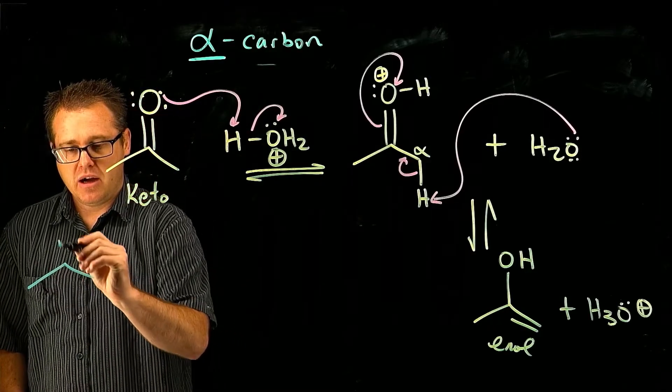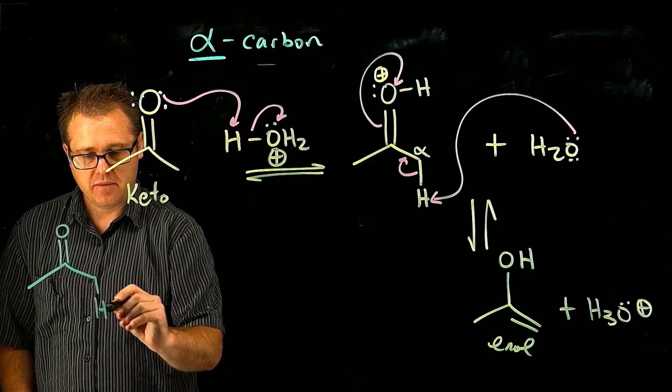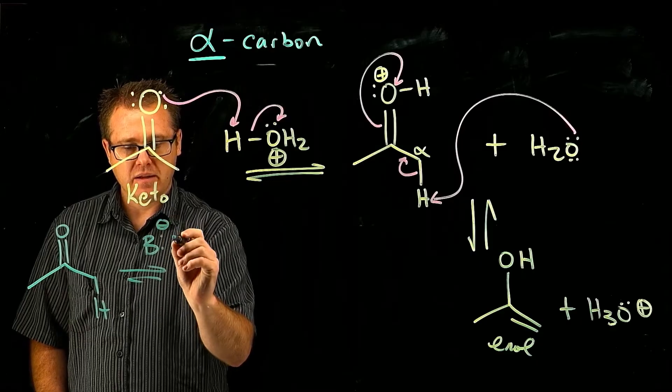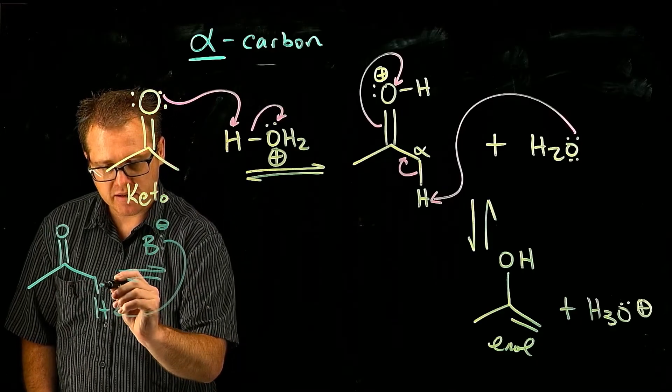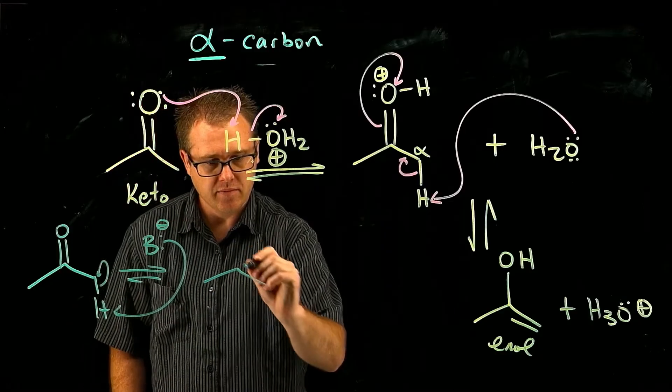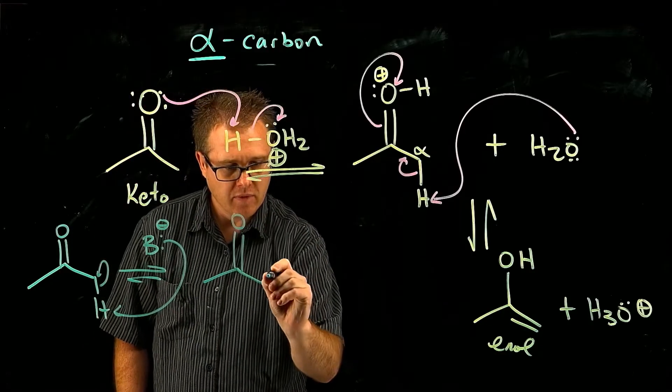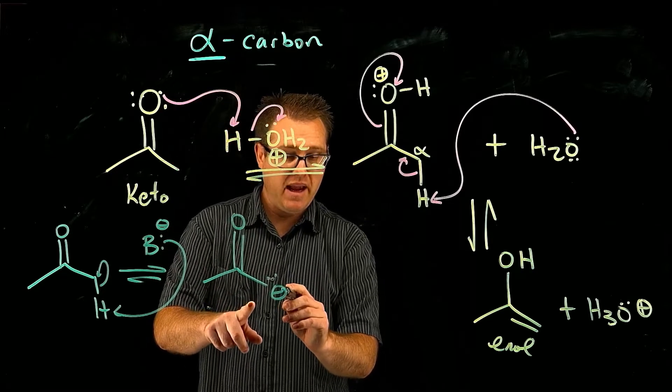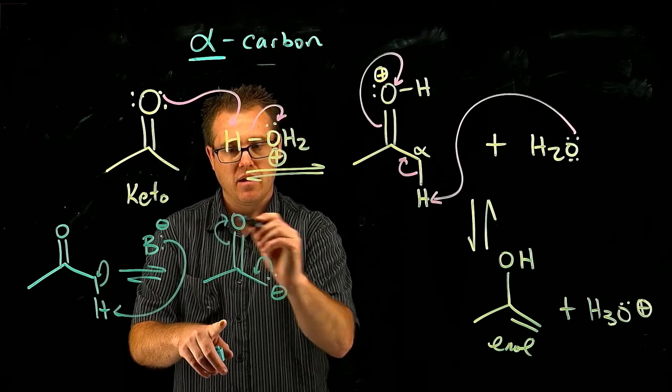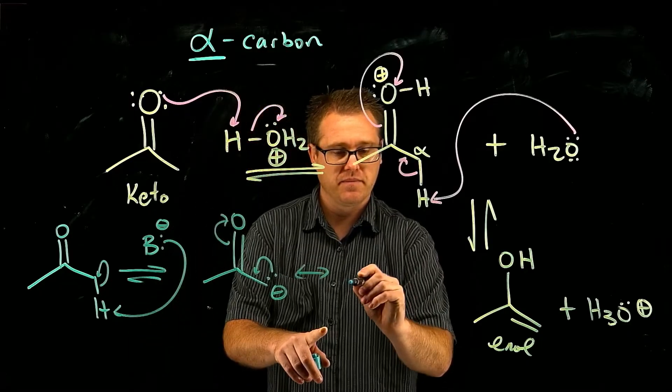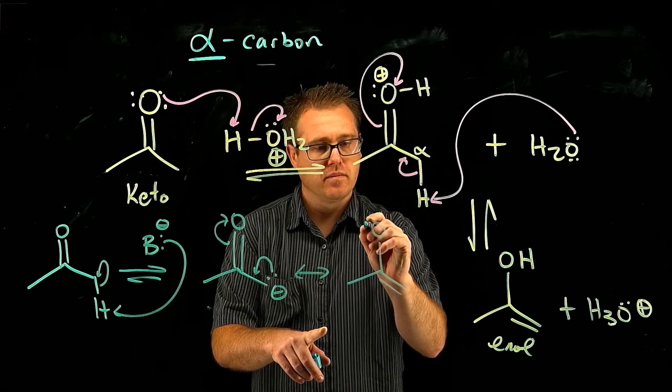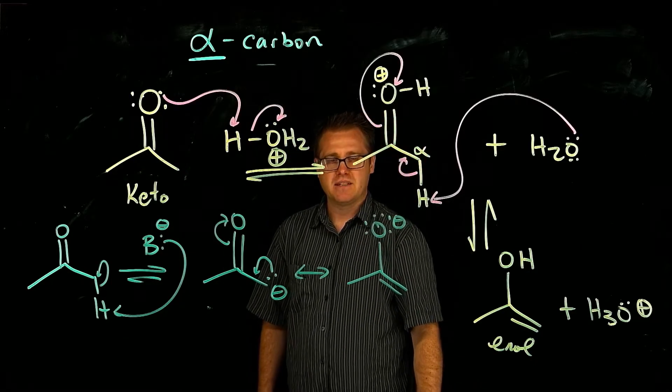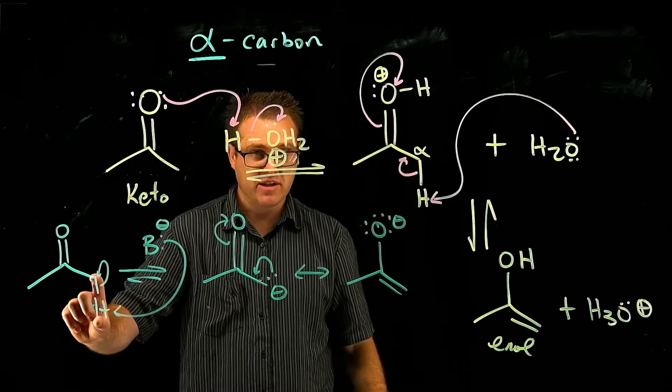So why is the alpha proton acidic? Well, if we take a base and abstract that proton, let me draw it like this. Why is it so acidic? It's because the conjugate base is stabilized by resonance. So here we form the enolate. That's why the alpha protons are acidic.